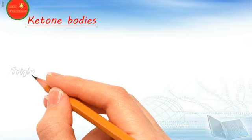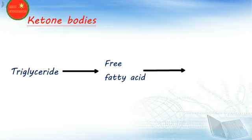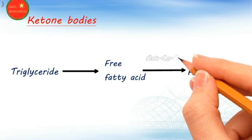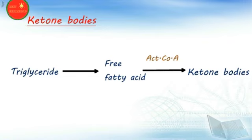Ketone bodies are intermediate products of fat metabolism. They are first present in the blood and then appear in urine. Their presence indicates that metabolism is impaired or incomplete. In the digestion process, triglycerides are converted into free fatty acids, and in the presence of acetyl-CoA these can be converted into ketone bodies.